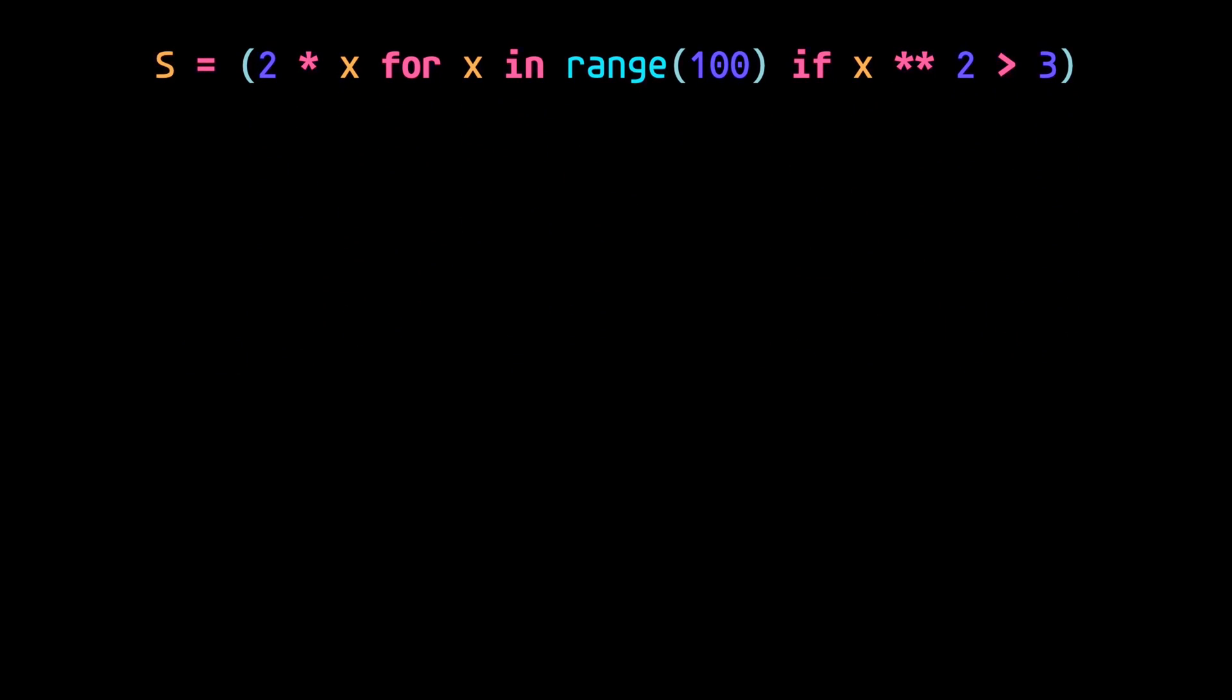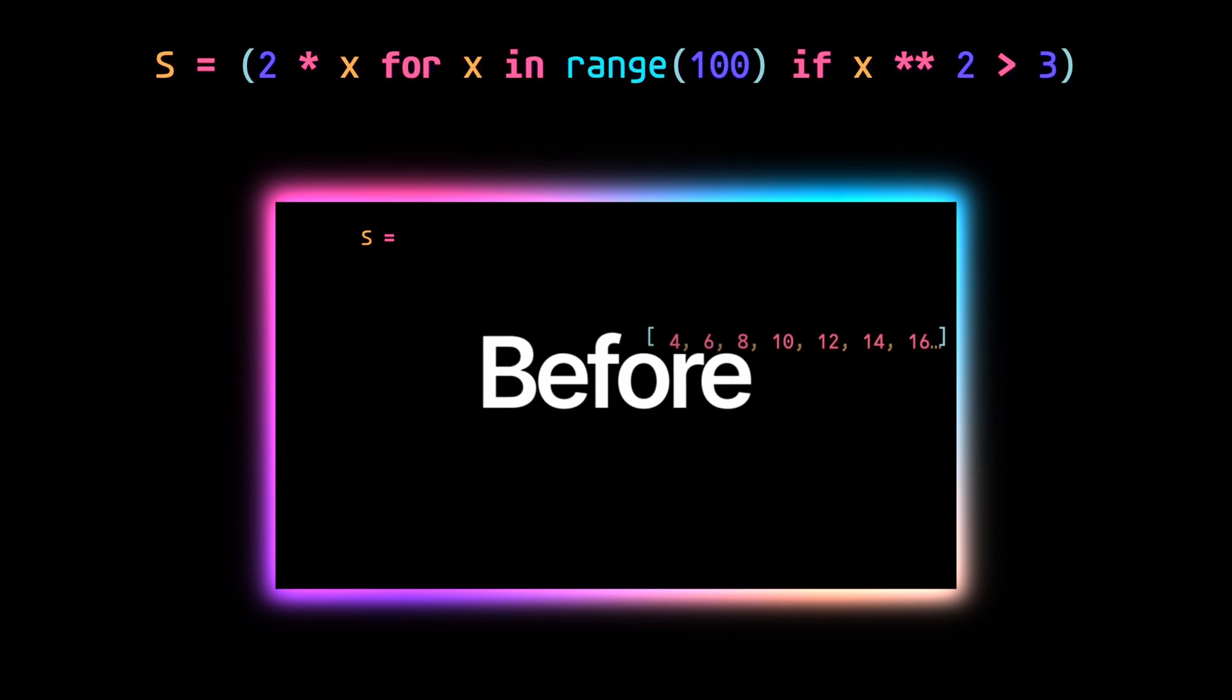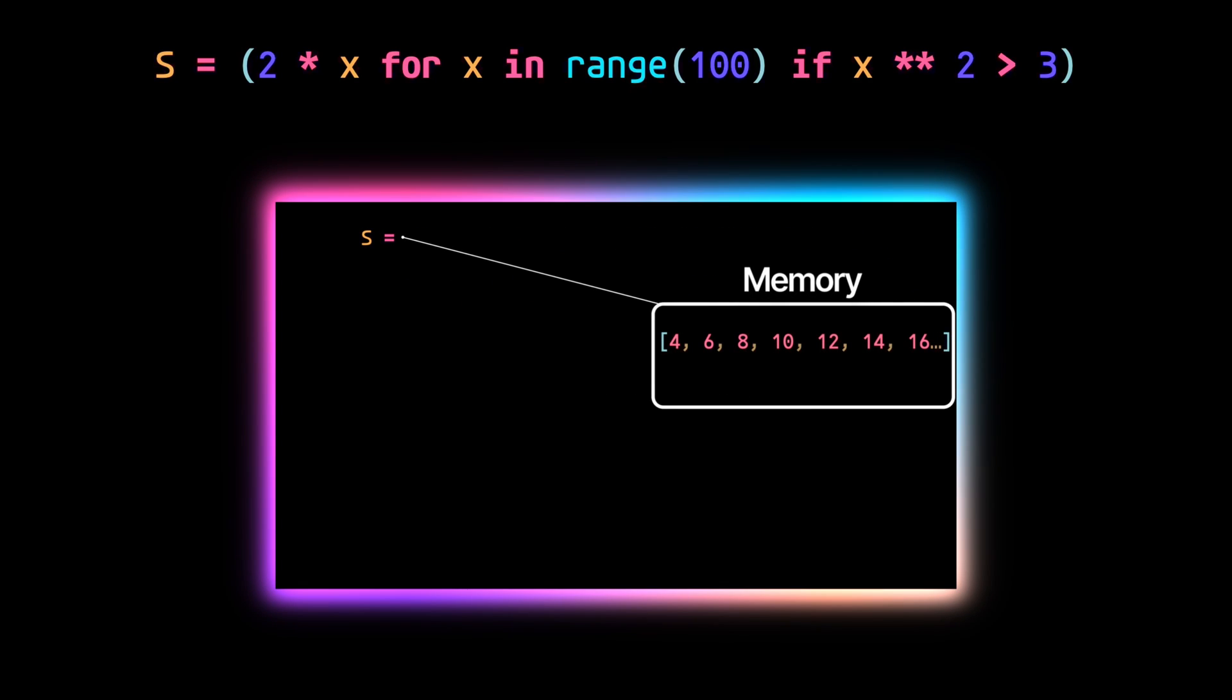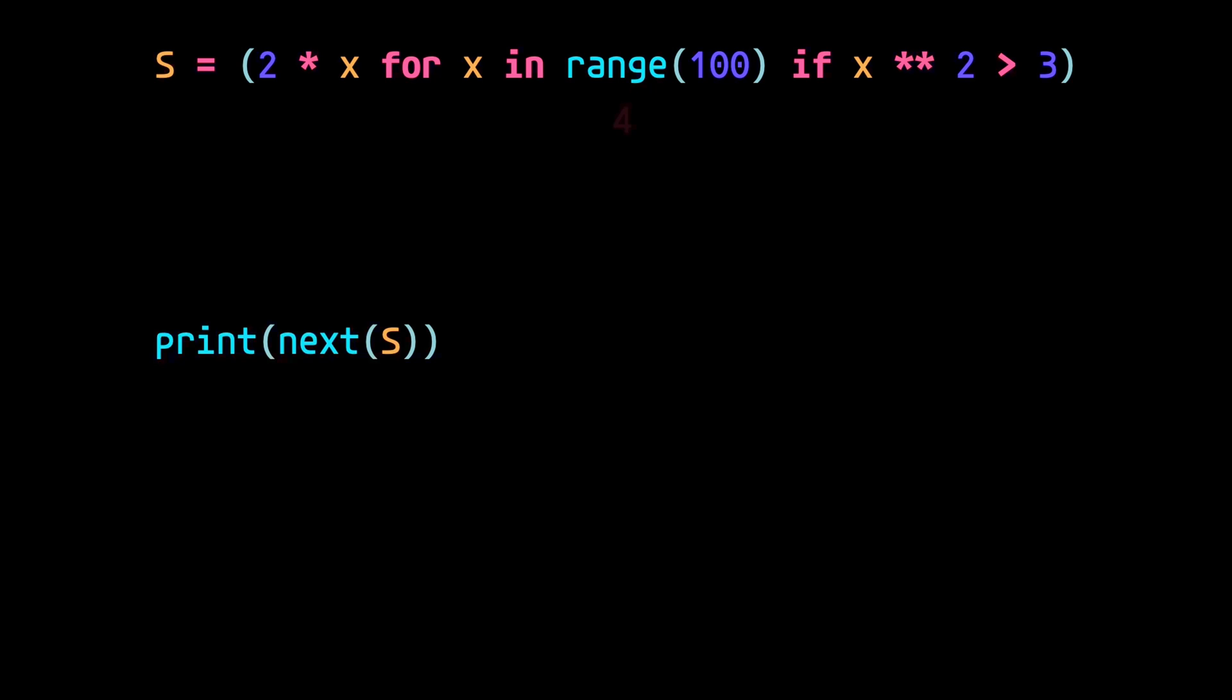When we assign a generator expression to a variable, instead of storing the entire resulting list from the list comprehension in memory, what happens is each value is generated one at a time when needed. We can then make use of that value somehow, and then it's discarded, essentially. And if we were to call next on the generator, we'd get the next value. This means that we can write some pretty memory efficient code.